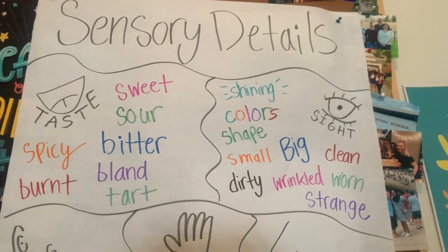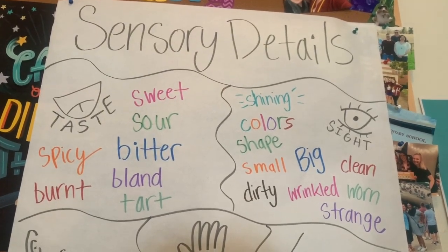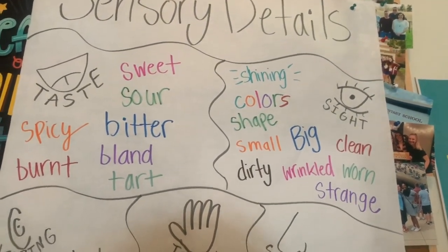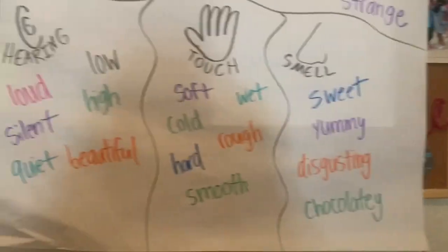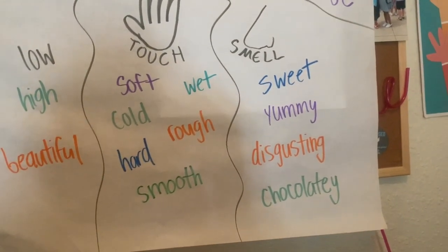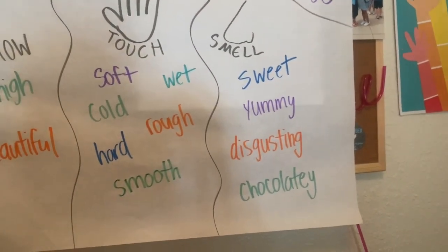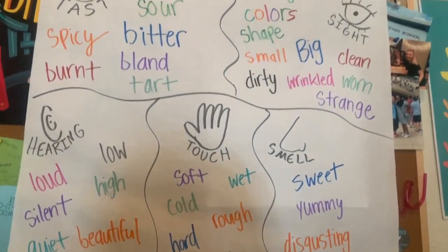When you go to write, we want to think about these different elements — what we call sensory details. I'm going to show you a quick chart of some examples. When you think of taste, you might think of sweet, sour, spicy, or bitter. For sight, you see colors and shapes, how big or small something is, if it's dirty or clean. For hearing, something might be really loud or really quiet. When you touch something, maybe it's soft, hard, cold, wet, or warm. For smell, something might smell sweet, yummy, or gross and disgusting.